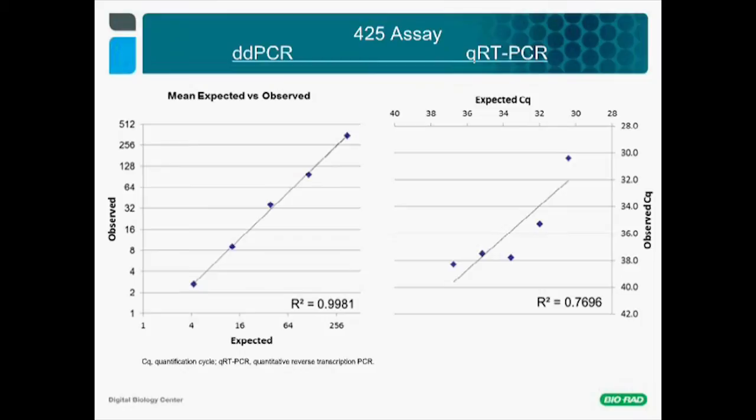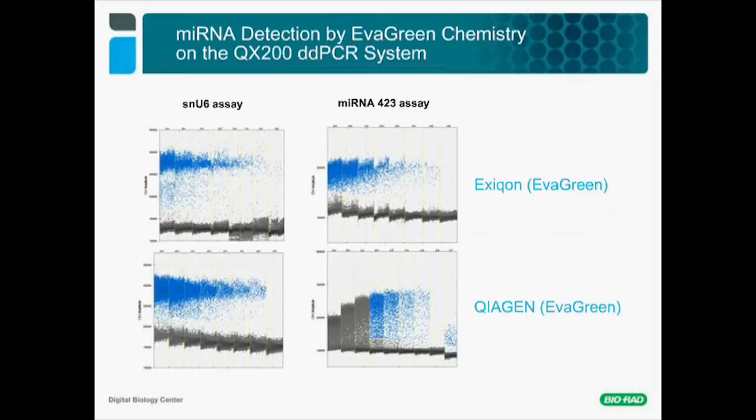A similar approach was used to validate the usability of the QX200 ddPCR platform for detecting miRNAs with intercalant chemistries. Two different assays from two different suppliers—Exiqon and Qiagen—were used in combination with Bio-Rad's EvaGreen SuperMix. The detection of miRNAs SNU6 and 423, as illustrated by the 1D plot in this dilution series, seems to work perfectly and provides excellent discrimination between positive and negative events for both kits and both RNAs.